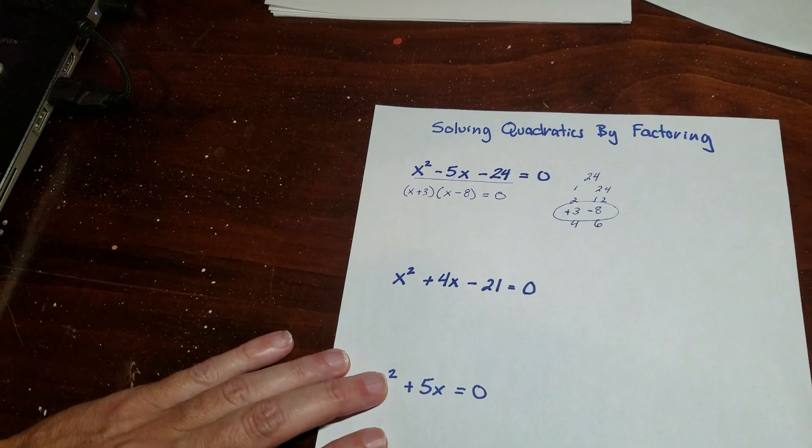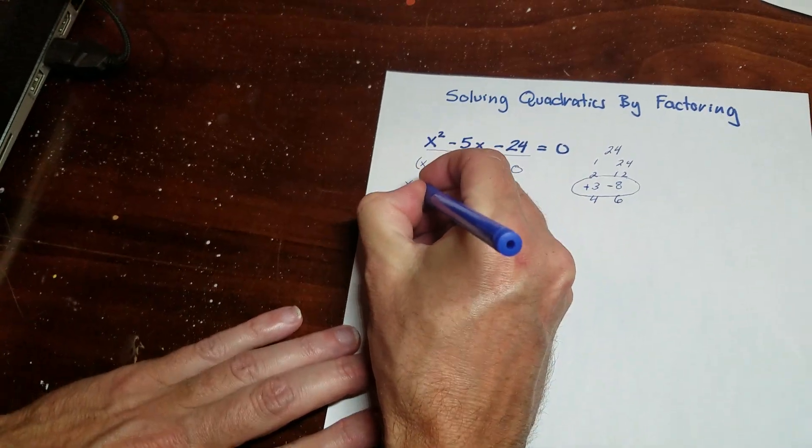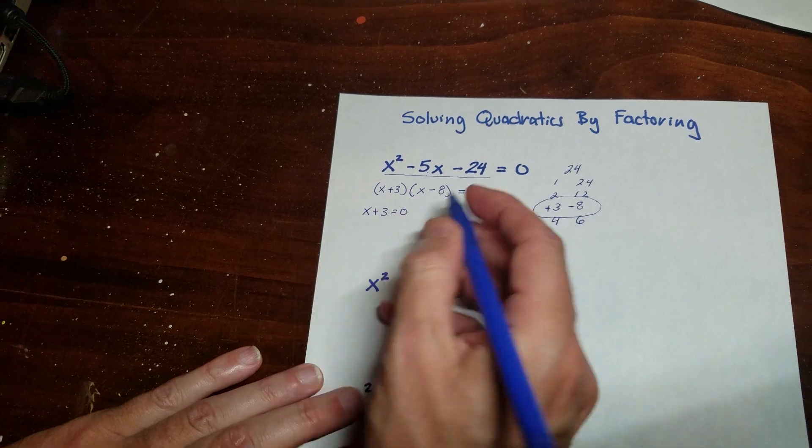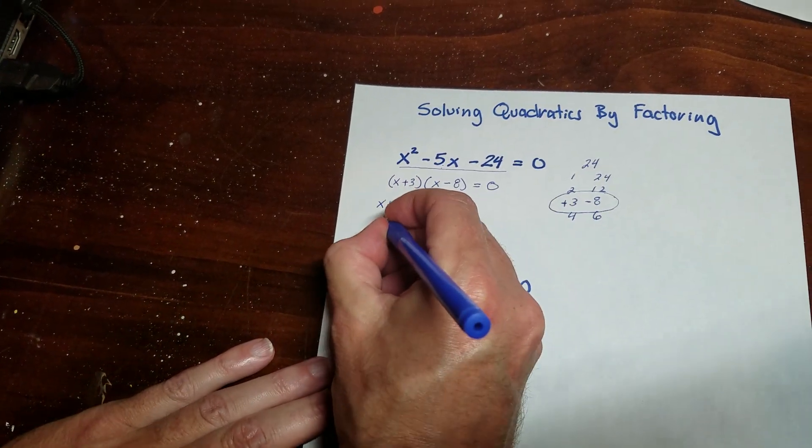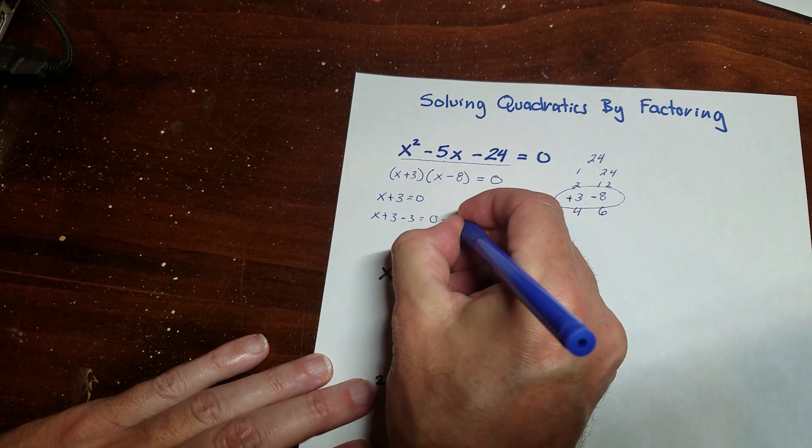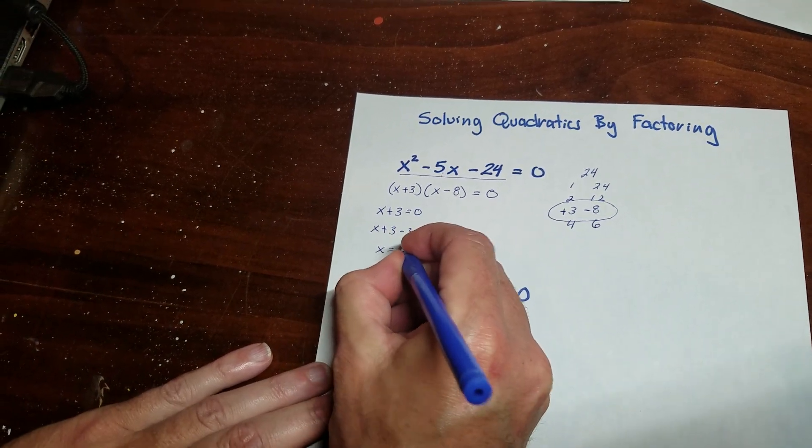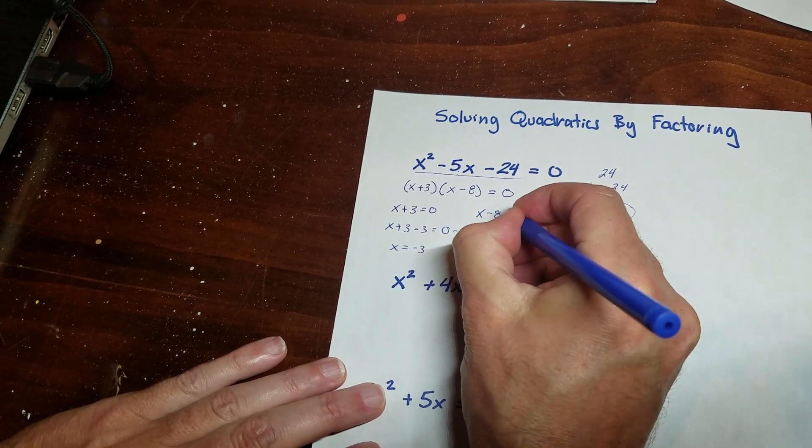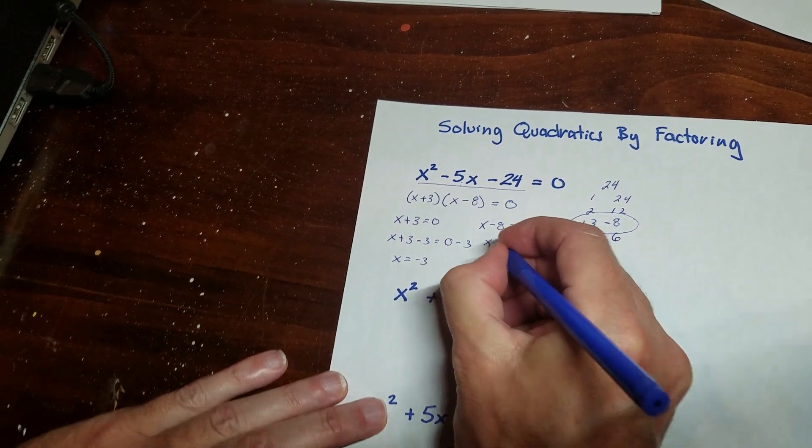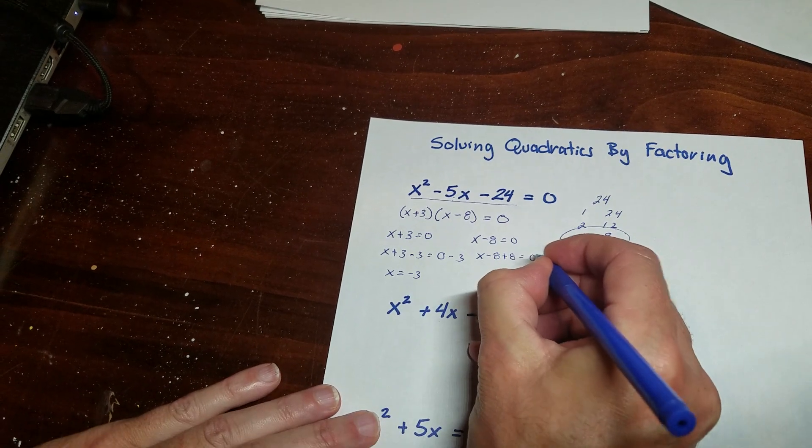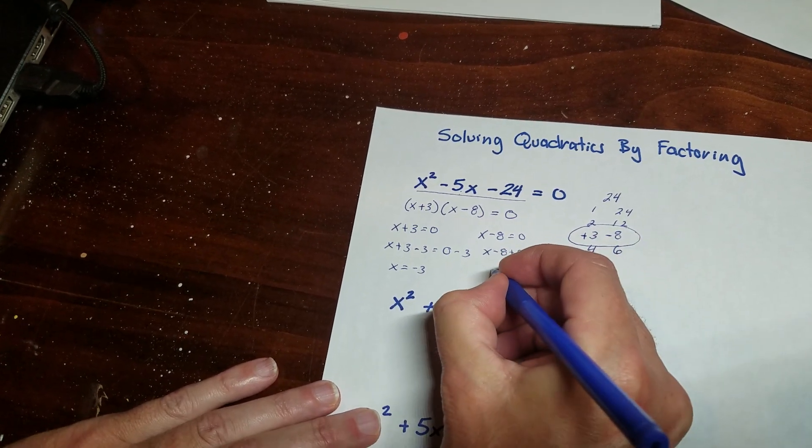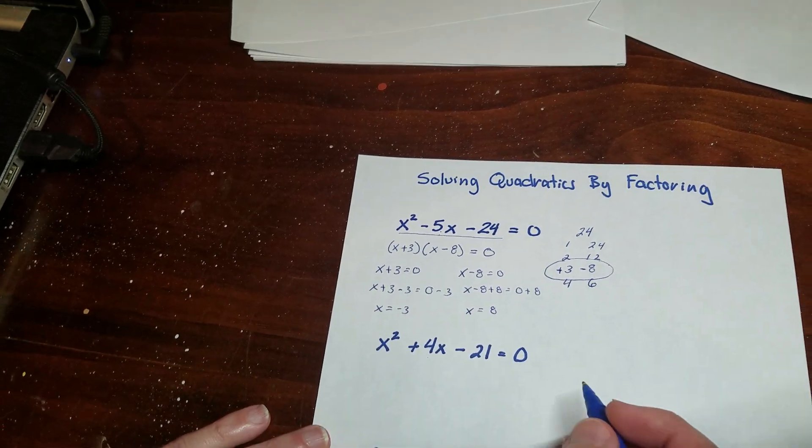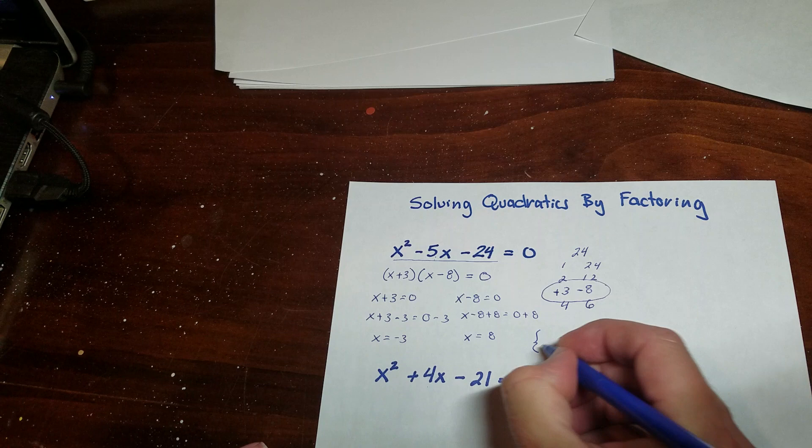So what I'm going to do is I'm going to make two equations. If this number is equal to 0, then I just solve this. It's pretty easy. x plus 3 is 0. So x plus 3 minus 3 is equal to 0 minus 3. So x is equal to negative 3. If this number is 0, again, I solve that one. So you can see what happens here is I actually turn this thing into two little equations. And so that means x is equal to negative 3 and x is equal to 8. And that is the answer.